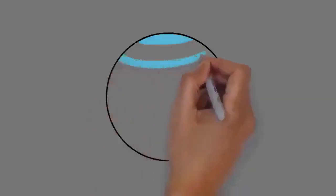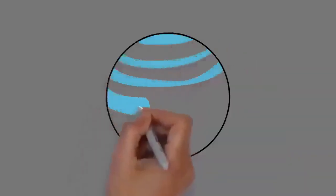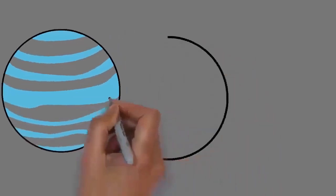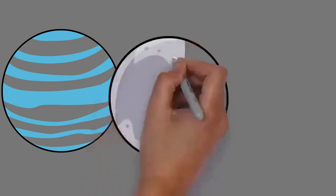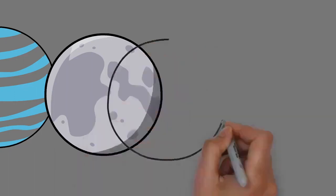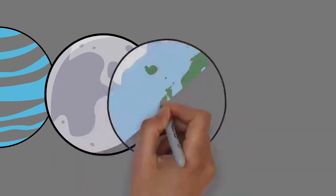Earth is the third planet from the Sun and the only astronomical object known to harbor life. This is enabled by Earth being a water world, the only one in the solar system sustaining liquid surface water. Almost all of Earth's water is contained in its global ocean, covering 70.8% of Earth's surface.